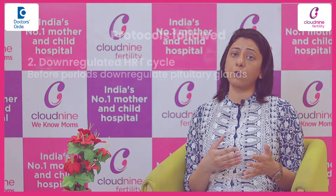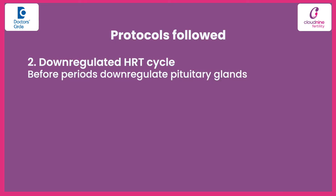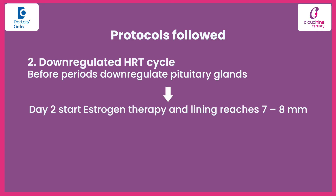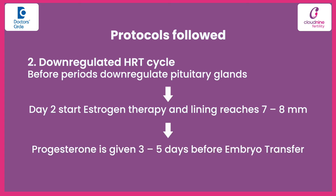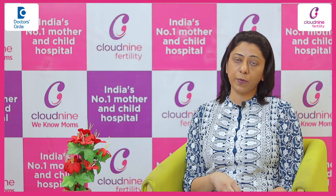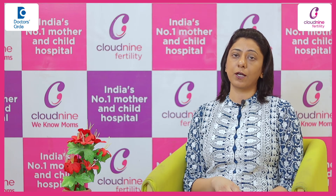Another protocol is the down-regulated HRT cycle. Here, before periods, we down-regulate the pituitary gland with the help of some injections or medication. From day two we start estrogen therapy, and once the lining reaches optimum size of seven to eight mm, we give progesterone three or five days prior to the embryo transfer.